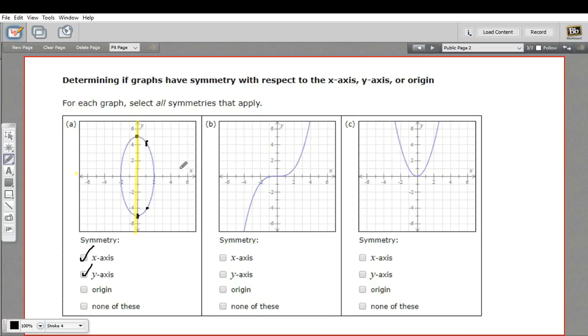In this case, if you want to think about it in terms of coordinates, if you have the coordinate (x, y), you're going to have the coordinate (negative x, y) on the graph as well.